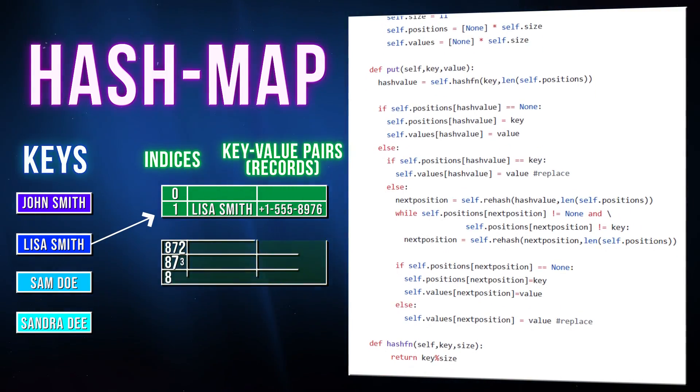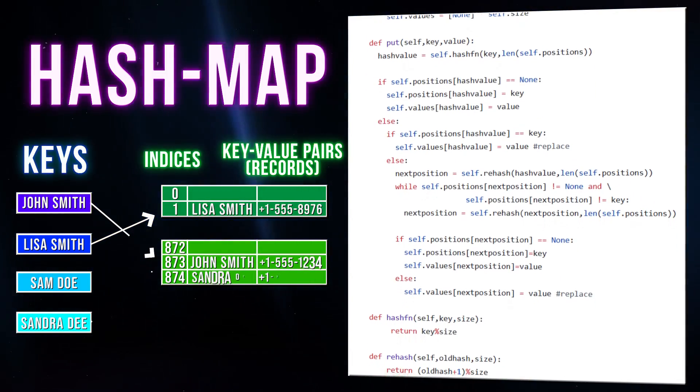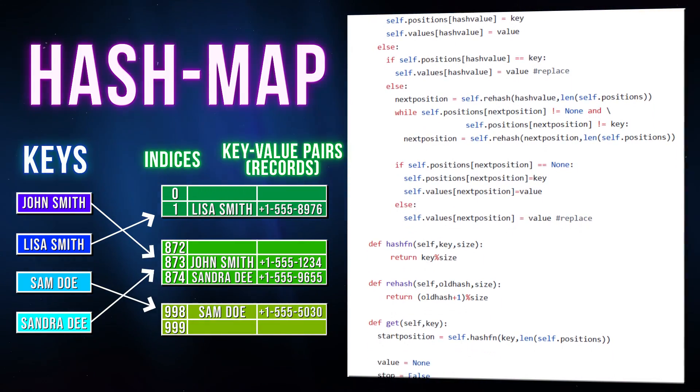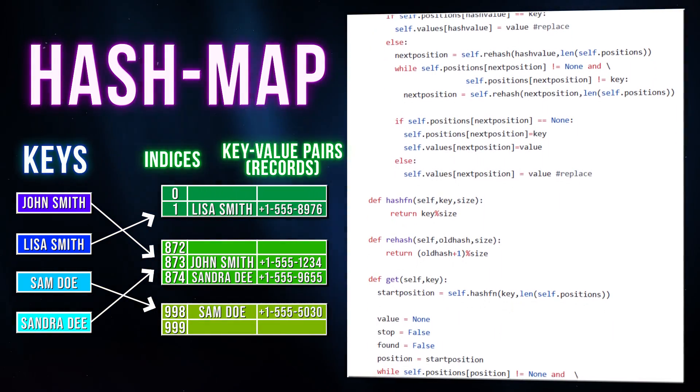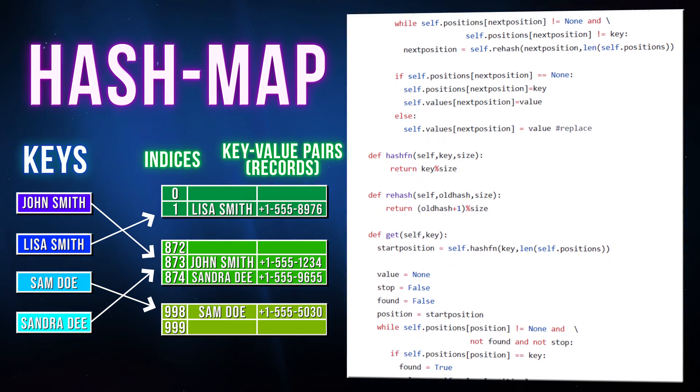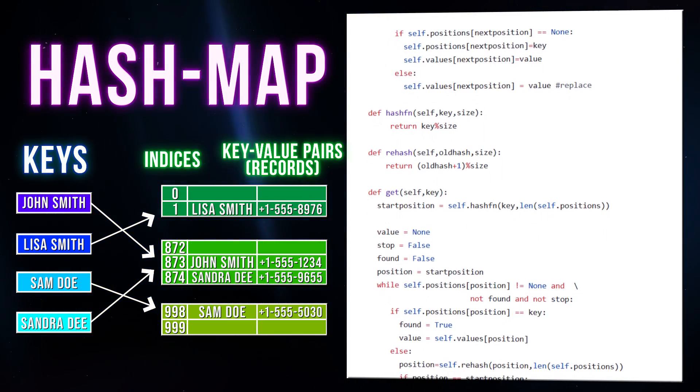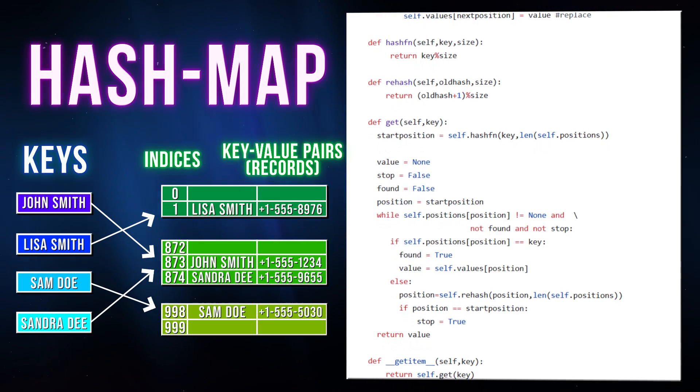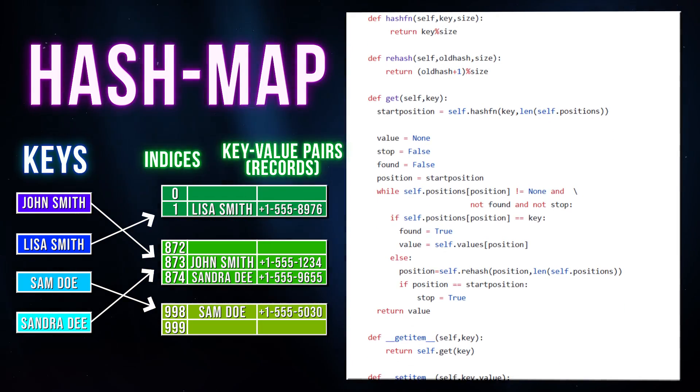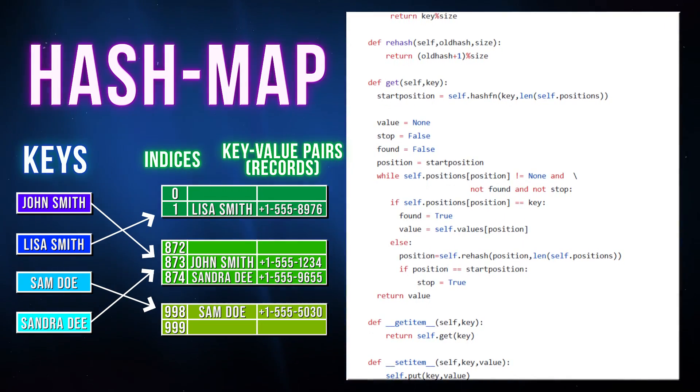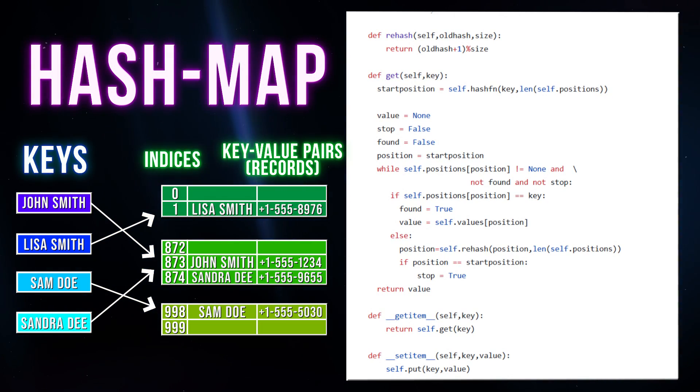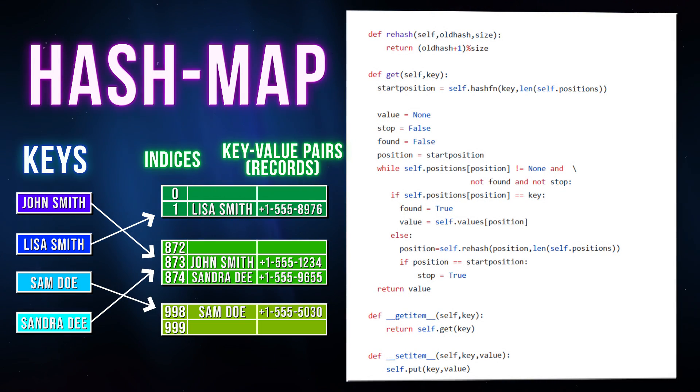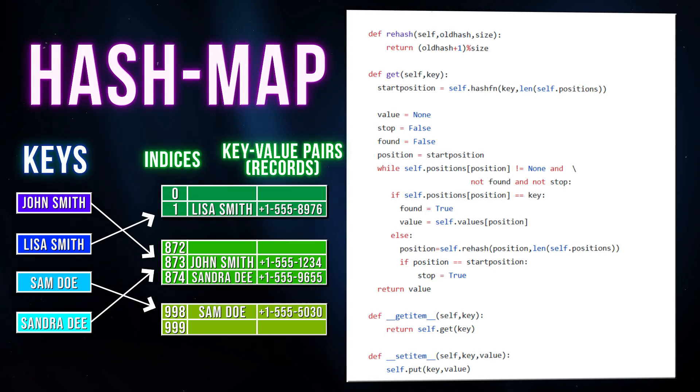For example, the most useful data structure to know for interviews is the HashMap. It's an unordered collection of key-value pairs where each key is unique. If you don't know what you're doing, just throw a HashMap at a problem and you'll likely make some progress. Python dictionaries make implementing a HashMap very simple. Stacks and queues are also very common solutions to interview problems. You can use Python lists to easily create each of these.